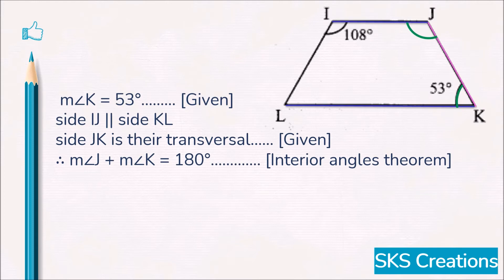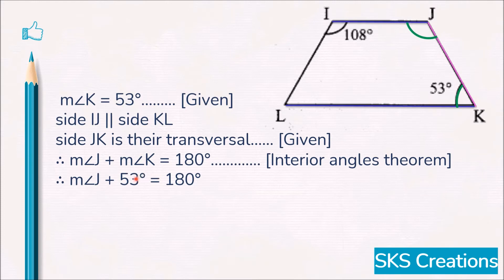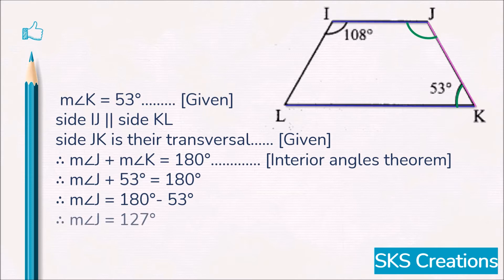Therefore, measure of angle J plus measure of angle K equals 180 degrees. Measure of angle K is given as 53 degrees, so we replace it: measure of angle J plus 53 degrees equals 180 degrees. Shifting 53 to the other side, the sign changes, so measure of angle J equals 180 minus 53 degrees. Therefore, measure of angle J equals 127 degrees. So angle L equals 72 degrees and angle J equals 127 degrees.